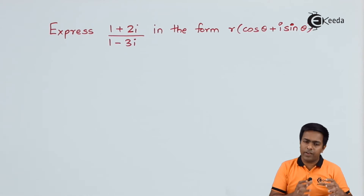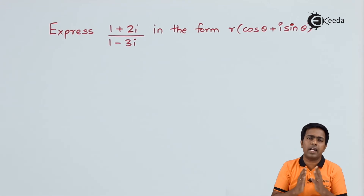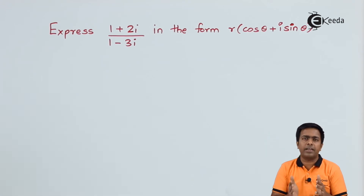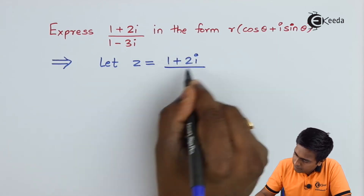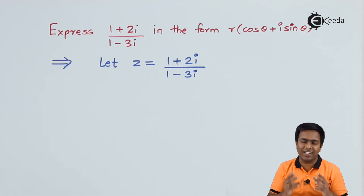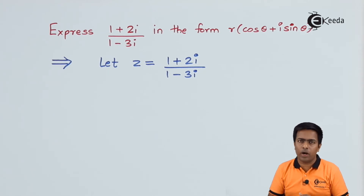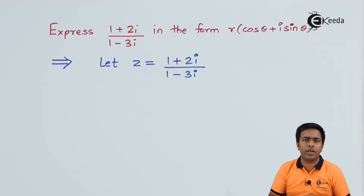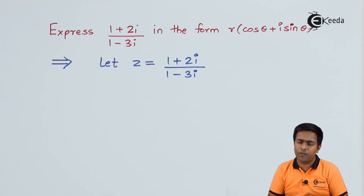The standard form is when we have a single real part and a single imaginary part in the form x + iy. To bring the number into standard form, we observe the denominator, which contains a complex number. To eliminate that complex number from the denominator, we take its conjugate — which is 1 + 3i — and multiply both numerator and denominator by it.